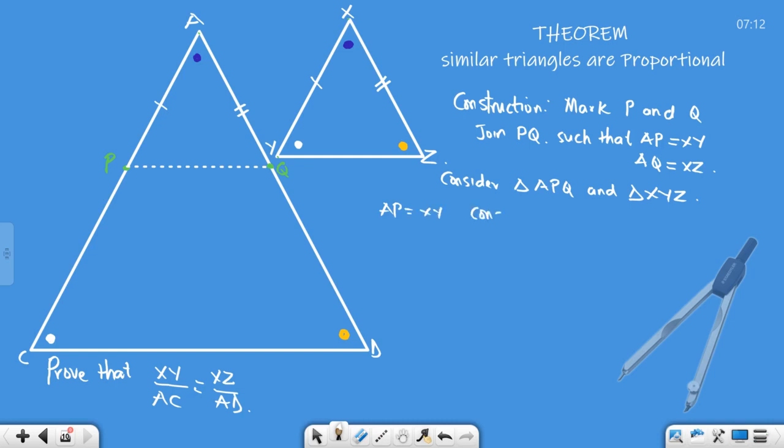AP equals XY by what? Construction. That's a side already. Angle A is equal to angle X—we are given the blue one. Now the other side: AQ is equal to XZ, also by what? Construction.